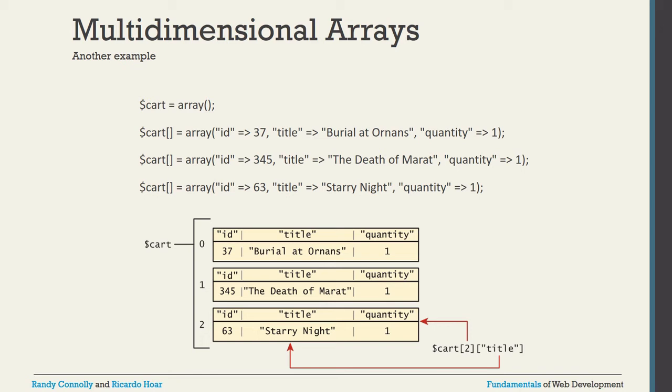You can also define multi-dimensional arrays where the vertical index is an integer and the horizontal index is a string. For example, an array with keys 'id', 'title', and 'quantity' as the horizontal string keys. To display the title of element at index 2, you write dollar-sign cart[2]['title']. Vertical indexes default to 0, 1, 2 if not explicitly set.